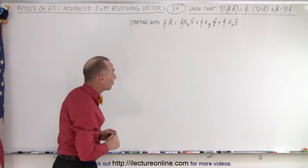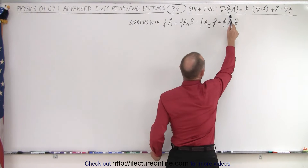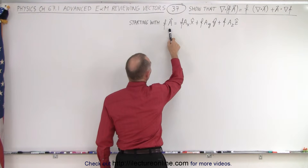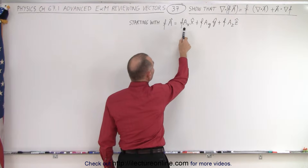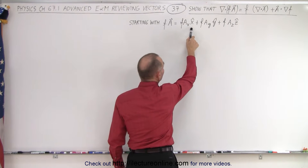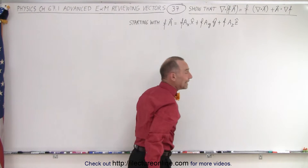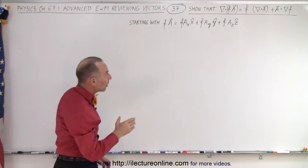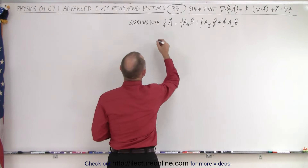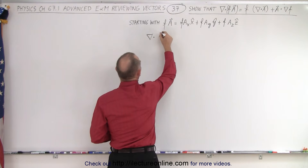Let's try and see if this is indeed the case. We're going to start out with the left side: f times A. Simply, f times A is equal to f times each of the components of A — A sub x in the x direction, plus A sub y in the y direction, plus A sub z in the z direction. Now we're going to take the divergence of that.